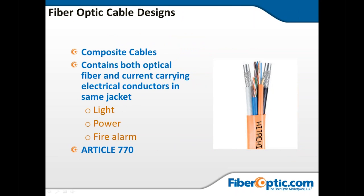Here's something interesting: composite cables. These have both fiber as well as power — electrical conductors. You can have twisted pair phone lines, coax cable, or other conductors in there. You can transmit light, power, and telephone all in one. It's basically a customized cable — you specify your application and the factors you need, and companies can manufacture these for you.